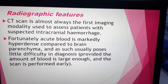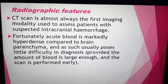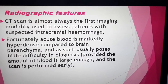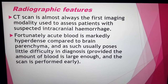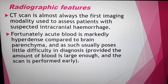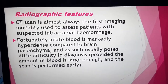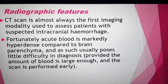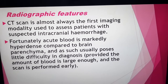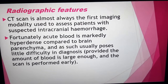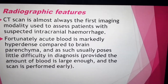CT scan is the golden method for diagnosis of intracranial hemorrhage. Acute intracranial hemorrhage appears as a hyperdense area compared to the brain parenchyma. The area of hyperdensity depends on the amount of blood — large hemorrhage gives a large hyperdense area, small hemorrhage gives a small area. The hyperdensity appears as a brighter area than the adjacent brain tissue, making diagnosis straightforward.